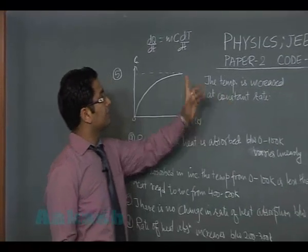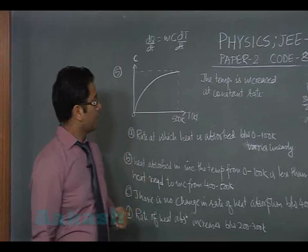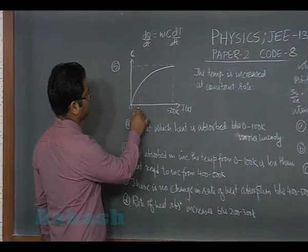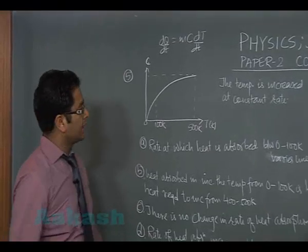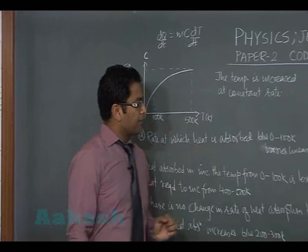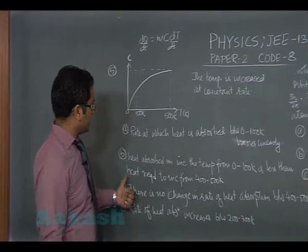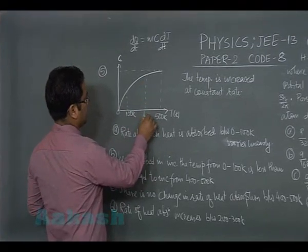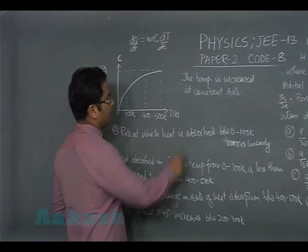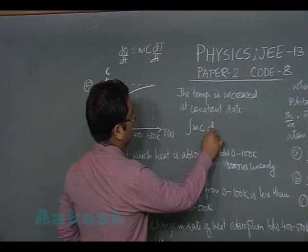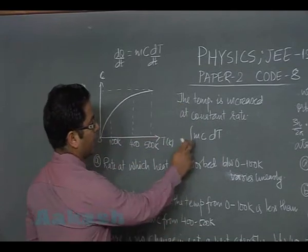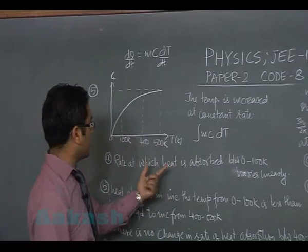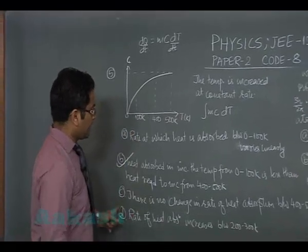You can easily see that temperature is increased at a constant rate. So now we have to see the rate at which heat is absorbed between 0 to 100. That's quite obviously variable. Heat absorbed in increasing the temperature from 0 to 100 is less than heat required to increase from 400 to 500 kelvin, and this is correct because you could see the heat absorbed would be ∫mc dt. If you bring m outside, it's an area under the specific heat-temperature graph.